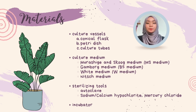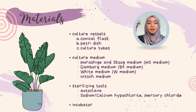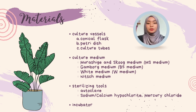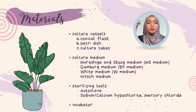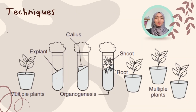The materials needed for tissue culture include: first, culture vessels such as conical flasks, petri dishes, and culture tubes. Next, a culture medium, which can be Murashige and Skoog medium, Gamborg medium, White medium, or Nitsch medium. Thirdly, sterilizing tools including an autoclave for apparatus, and sodium or calcium hypochlorite, or mercury chloride for the explants. An incubator is also required.